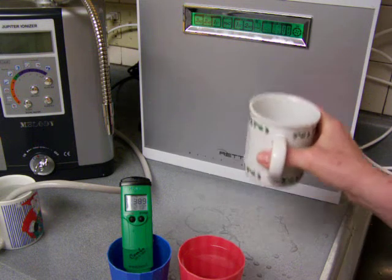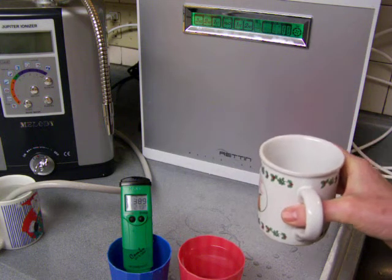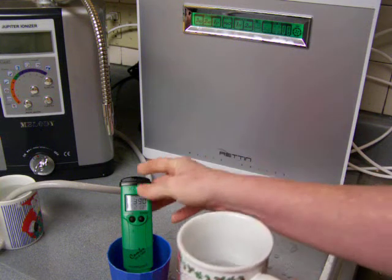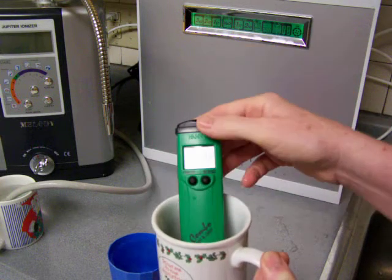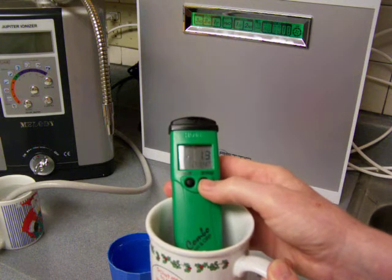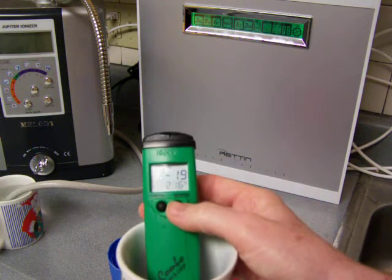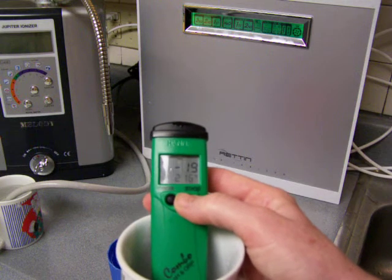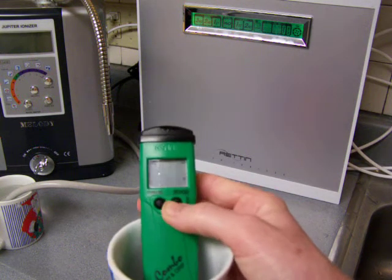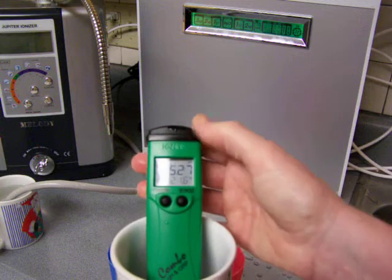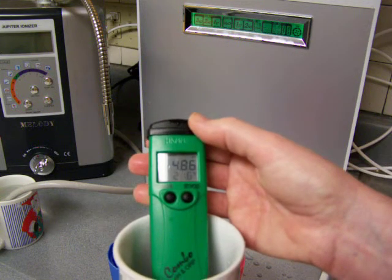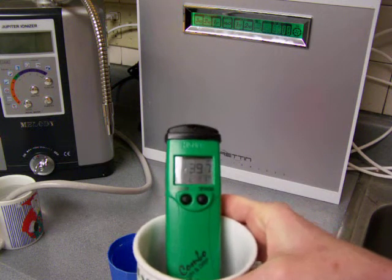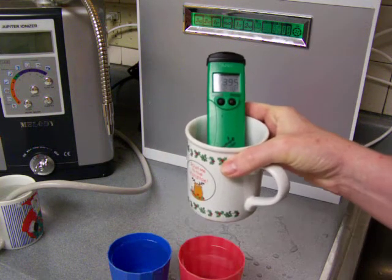Now this is the acidic water from the Tyent. I didn't really want to do the ORP because that's kind of silly, but you can see that it does have somewhat of a negative ORP. That's interesting - usually that goes in the positive range. All right, so it's settling, going down, down, down.